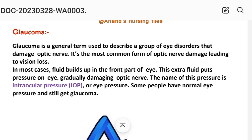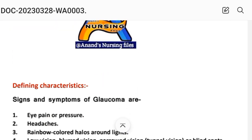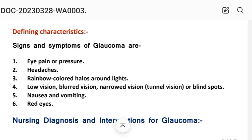Some people have normal eye pressure and still get glaucoma. The defining characteristics — that is, signs and symptoms of glaucoma — are: eye pain or pressure, headache, rainbow-colored halos around light, low vision, blurred vision, narrow vision or tunnel vision or blind spots, nausea and vomiting, and red eye. On the basis of these characteristics, we write the nursing care plan.